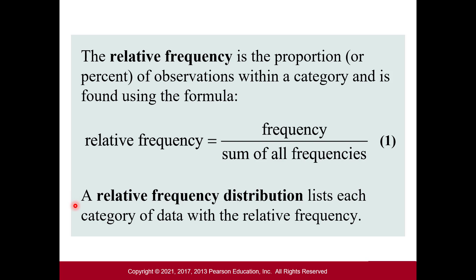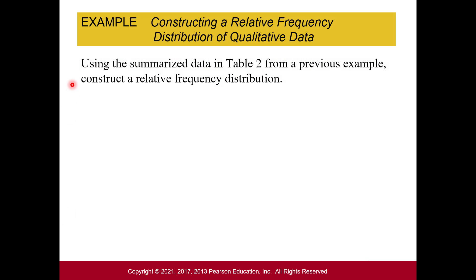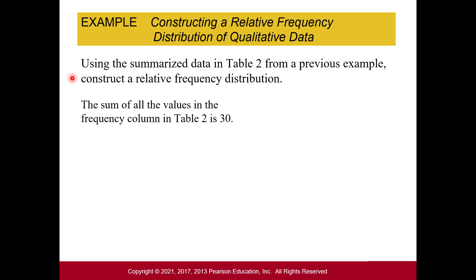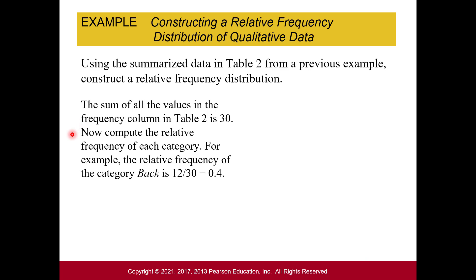A relative frequency distribution lists each category of data with the relative frequency. Using the same example, the sum of all frequencies was 30. For back, there were 12 occurrences, so the relative frequency is 12 over 30, which is 0.4, or 40%. You can interpret this as: 40% of the patients surveyed had a back injury.